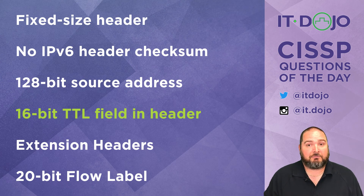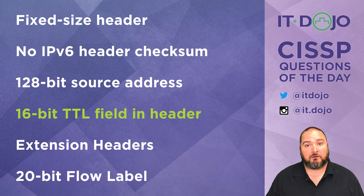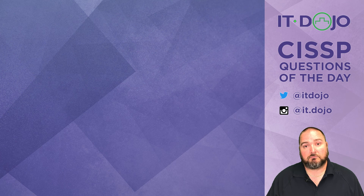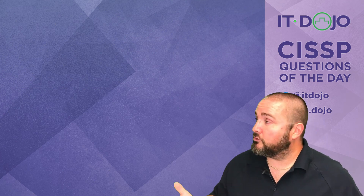To summarize: the correct answer we were looking for is the 16-bit TTL field, which does not exist in an IPv6 header. One — it's not called time-to-live, it's called hop limit. Two — it's only 8 bits in length, not 16 bits. Two more questions down — hope you dug them and they're helping you prep for your exam.